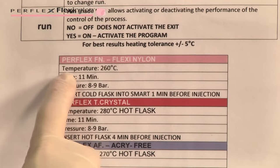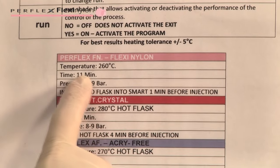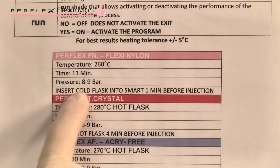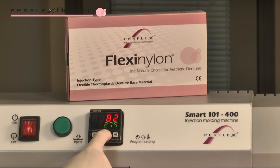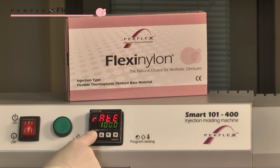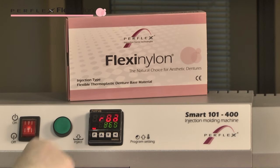Injecting Flexi Nylon with Smart 101 to 260 degrees Celsius, 11 minutes, 9.5 bar, cold flask process. Programming the Injection Parameters: Press P on the thermocontroller to set the temperature to 260 degrees Celsius. Press P again. It will show ATE100. This parameter is the speed of heating and does not need to be changed. Press P. It will show TSP. Set the time to 11 minutes. Press P again to activate the machine. Yes means on. Press P again to see the temperature rising.